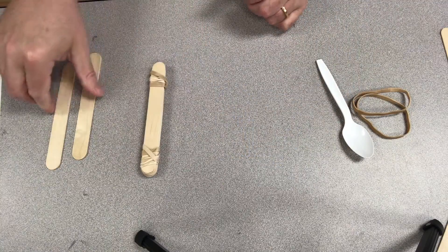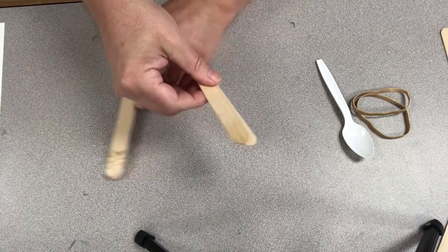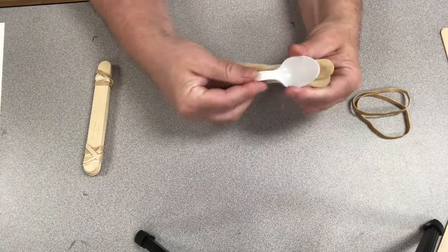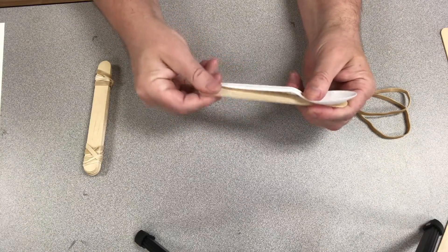All right, then we're going to take the other two sticks and put those together. Let's put that other bundle off to the side. We're going to take the spoon and place it on top of the two sticks stacked just like that.